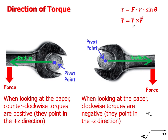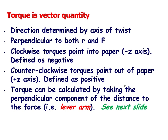Quick reminder: if you've got a situation where the bolt would tend to rotate counterclockwise, we say that's a positive torque, because the torque vector is pointing out of the page in the positive z direction. Clockwise torques we say are negative, because the torque vector points in the negative z direction. Torques can also be calculated by taking the perpendicular component of the distance to the force — sometimes called the lever arm.